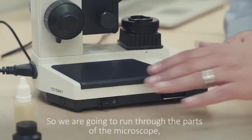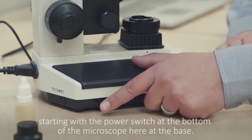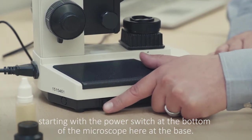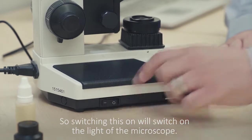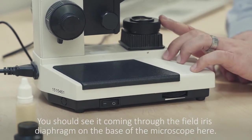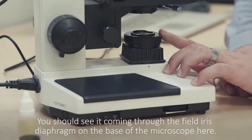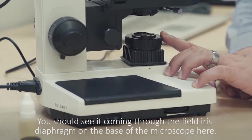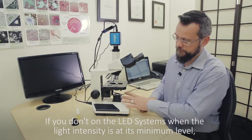We're going to run through the parts of the microscope starting with the power switch at the bottom of the microscope here at the base. So switching this on will switch on the light of the microscope. You should see it coming through the field iris diaphragm at the base of the microscope here.